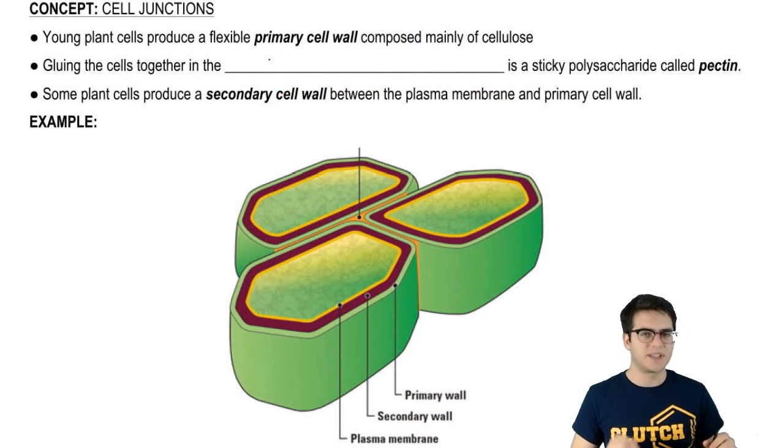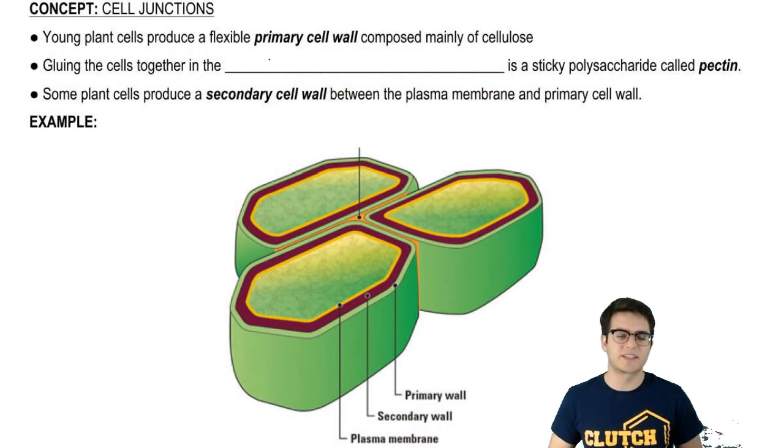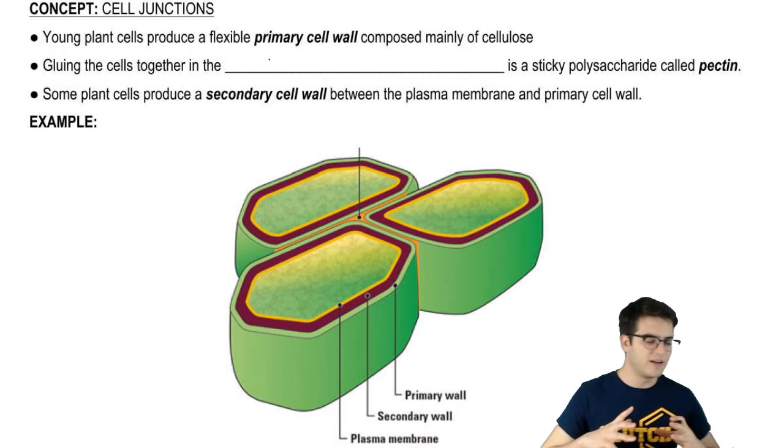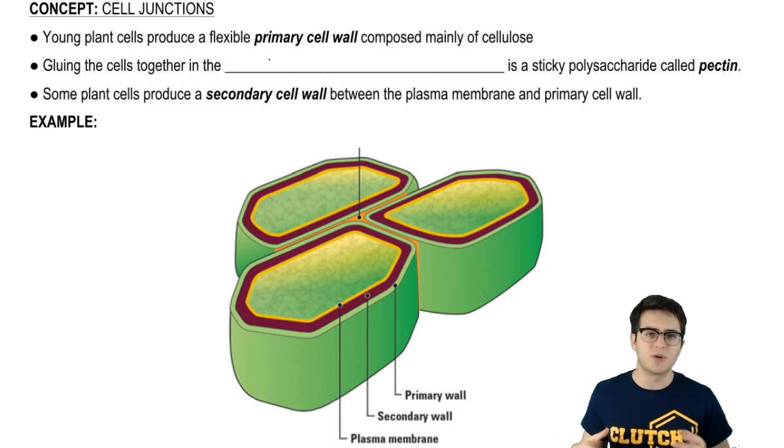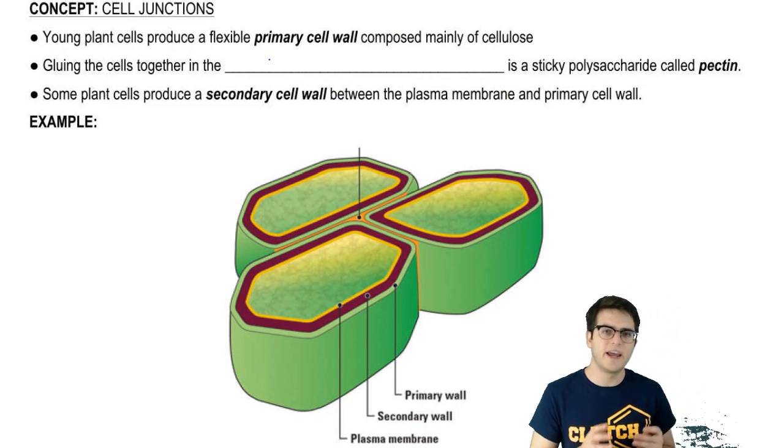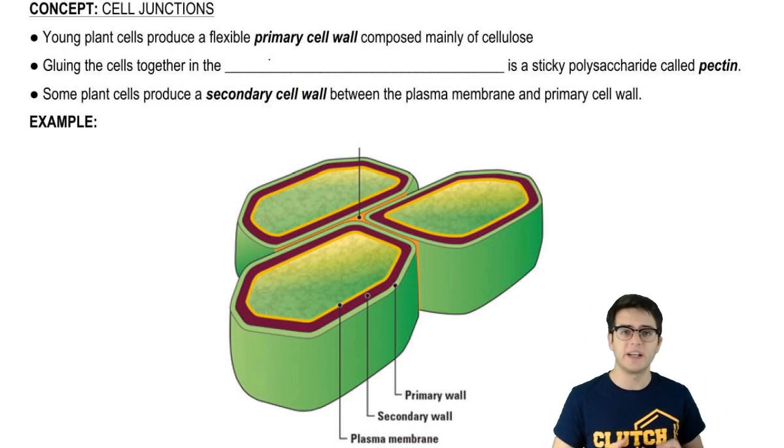So let's start off by talking about plant cells. Young plant cells secrete a flexible primary cell wall. This is a structure mostly made of cellulose that helps give plant cells their rigidity and their form.